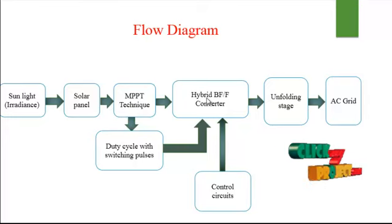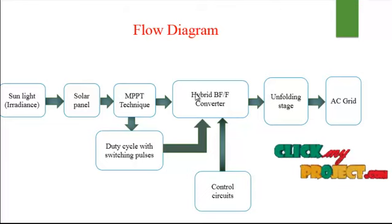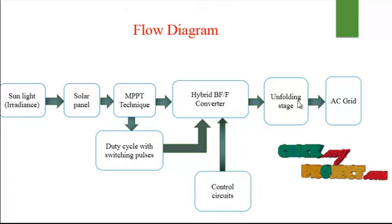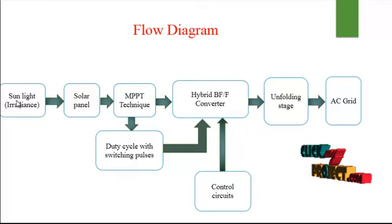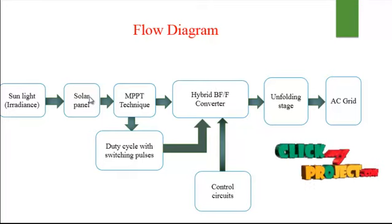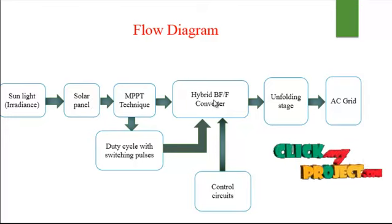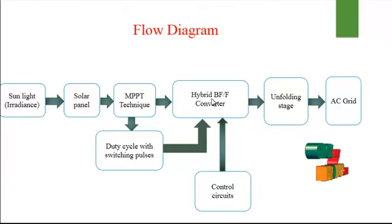The hybrid boost flyback to flyback converter receives switching pulses imported from the maximum power point tracking and duty cycle ratios. This is a major important step of the entire process, making a sufficient conversion to DC. For example, the solar panel generates 30 volts, and this hybrid boost flyback to flyback converter maximizes power to 300 watts.